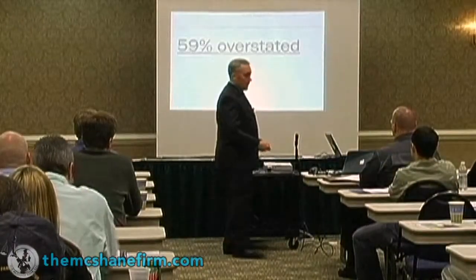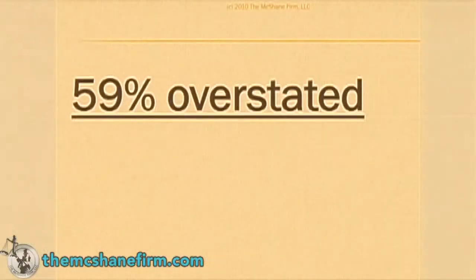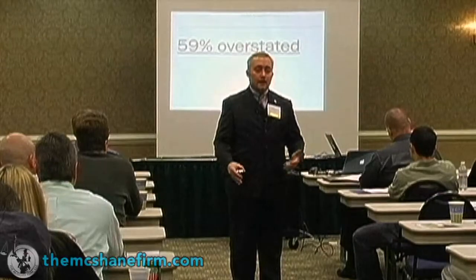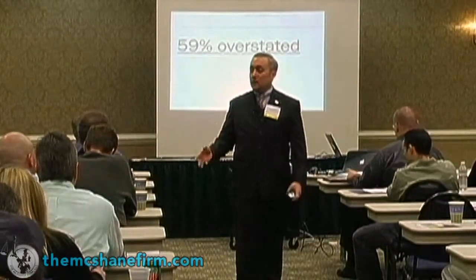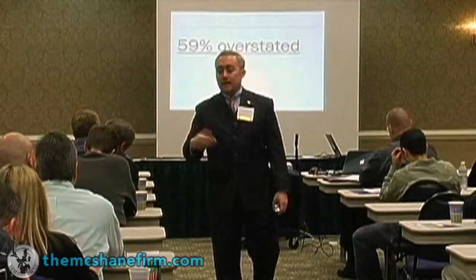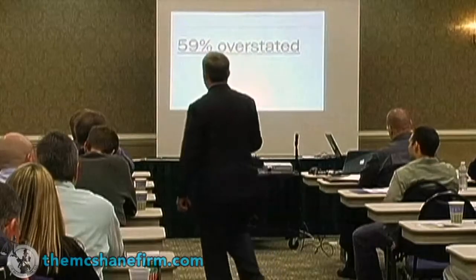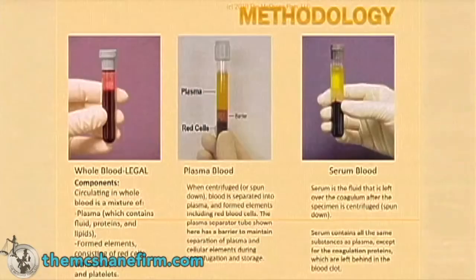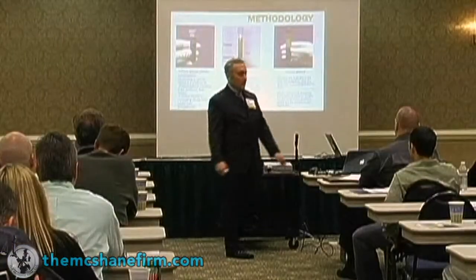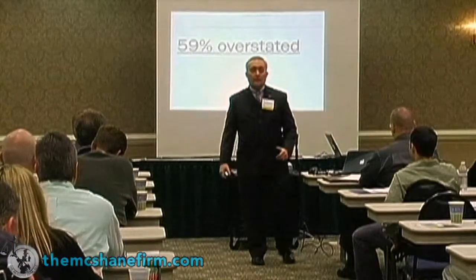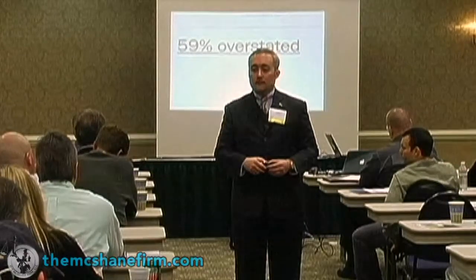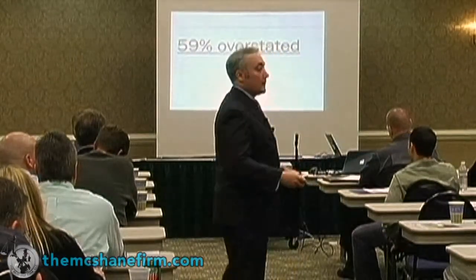When they make the conversion between plasma and serum blood back into whole blood — because whole blood is what statutes are based upon — if you're a 0.08 state, which all states are (my state has different tiers: 0.08, 0.10, 0.16) — that conversion back, if you believe it's possible to do, results in somewhere in the magnitude of a 59% overstatement. So what comes out of their machine at the end of their process is about 59% too much.